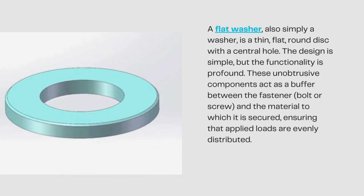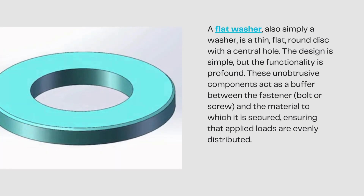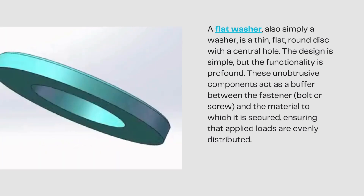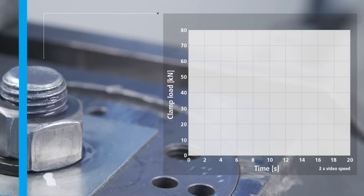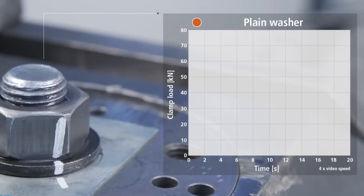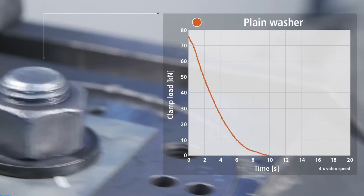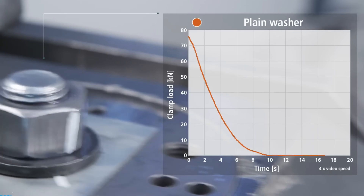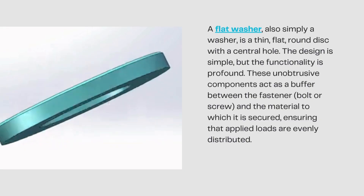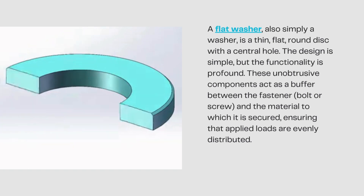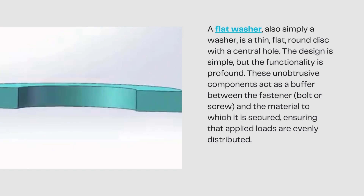A flat washer, also simply a washer, is a thin, flat, round disc with a central hole. The design is simple, but the functionality is profound. These unobtrusive components act as a buffer between the fastener, bolt or screw, and the material to which it is secured, ensuring that applied loads are evenly distributed.